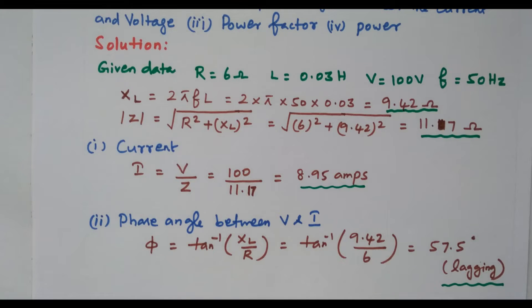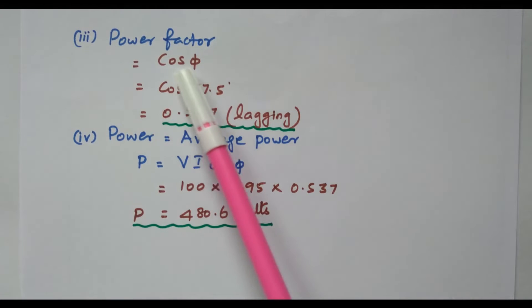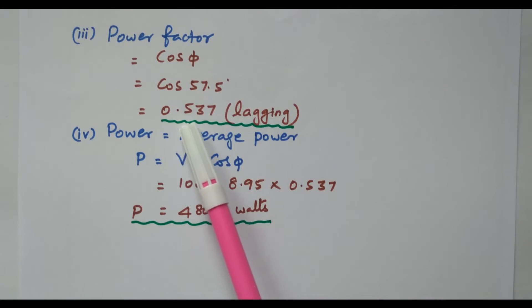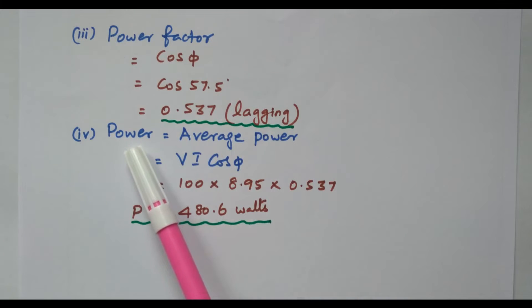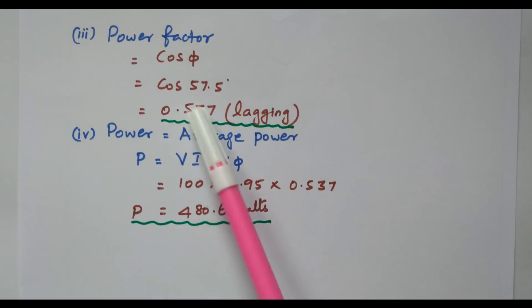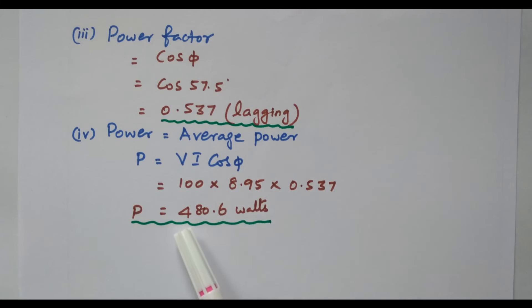Power factor = cos(θ) = cos(57.5°) = 0.537 lagging — again lagging due to inductance. Average power = V × I × cos(θ) = 100 × 8.95 × 0.537 = 480.6 watts. In this video, we discussed solved problems based on the RL circuit with resistor and inductor connected in series. We solved two different problems. Thank you.